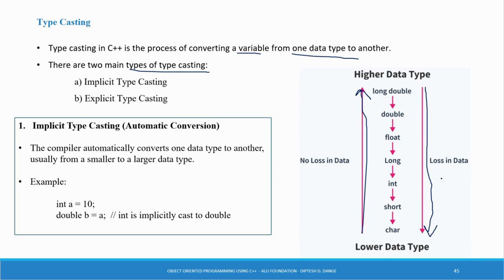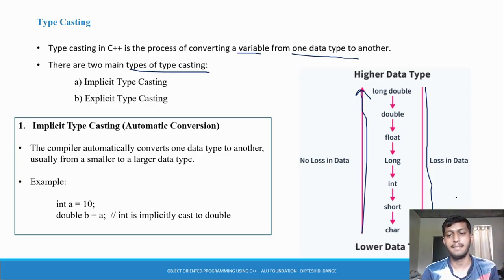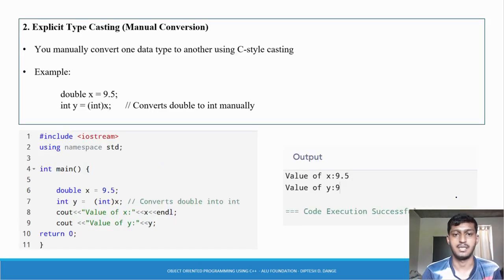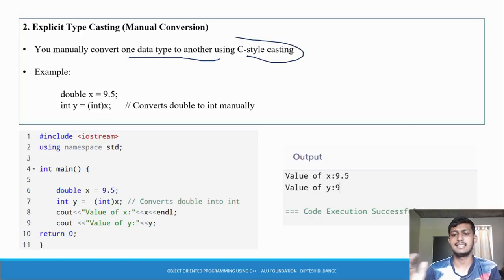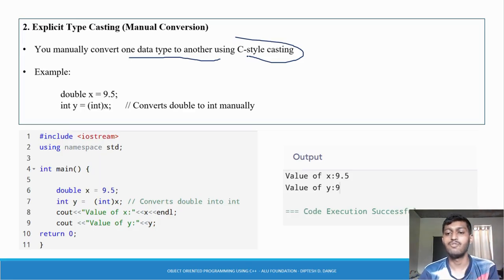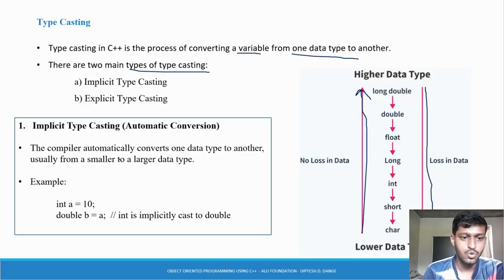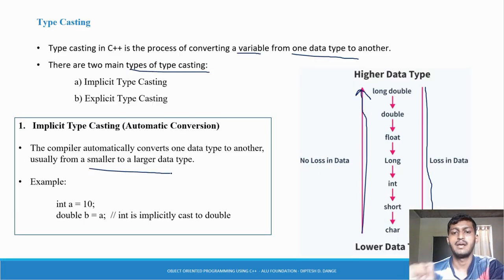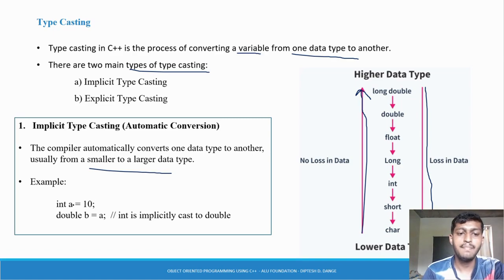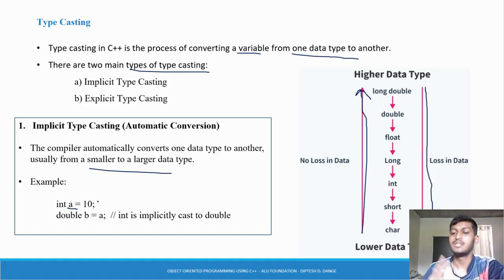For explicit type casting, we do it manually — we convert from one data type to another data type manually using C-style casting.